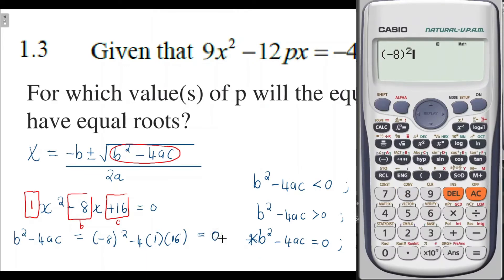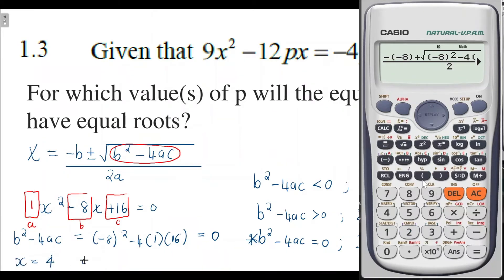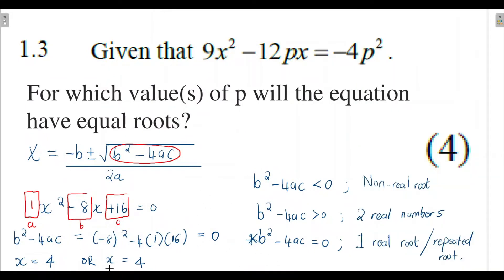If you punch that into your calculator, you'll find the discriminant equals zero. If you substitute those values into the quadratic formula, you get x equals 4 or x equals 4 — the same value. So when the discriminant equals zero, the root of your quadratic function is a repeated root, meaning x equals 4 regardless of whether you use the positive or negative in the formula.